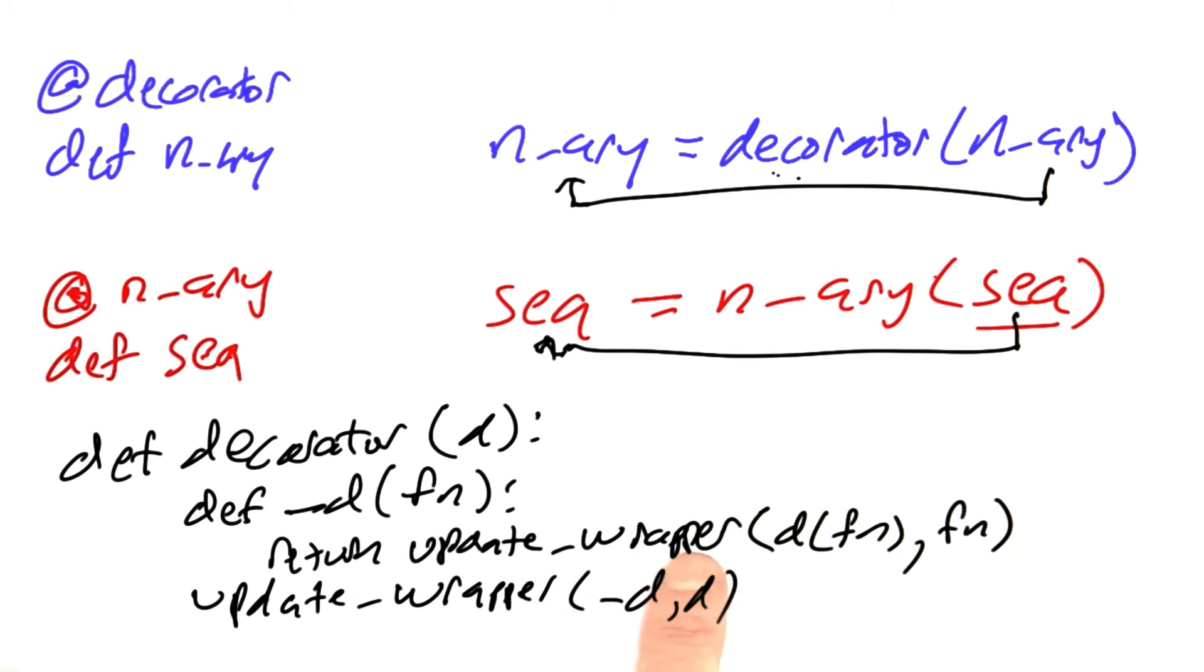It returns the update wrapper from applying the decorator to the function and copying over onto that decorated function the contents of the original function's documentation and name. Then we also want to update the wrapper for the decorator itself. From d, the decorated function, we want to copy that over into underscore d and then return underscore d.